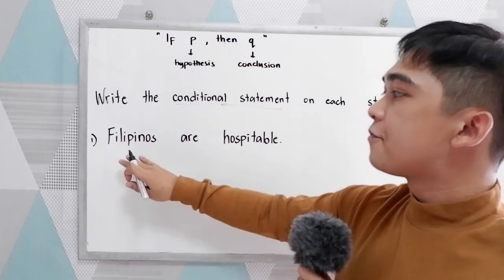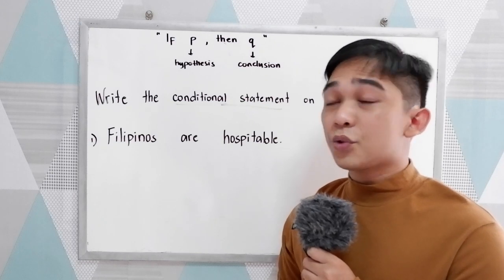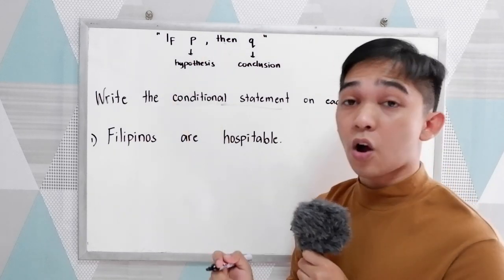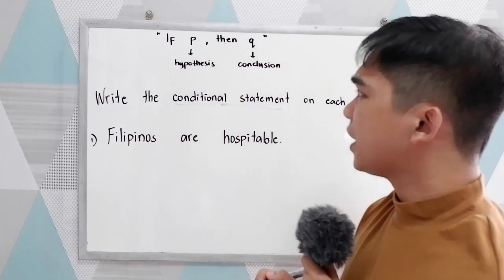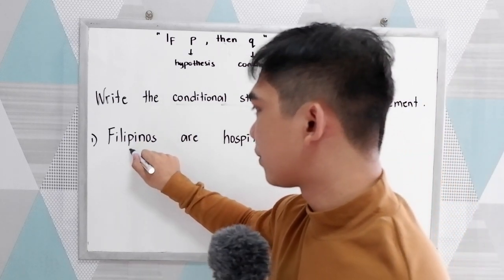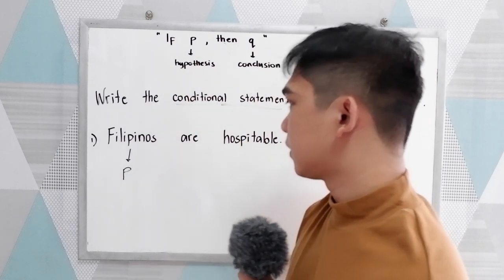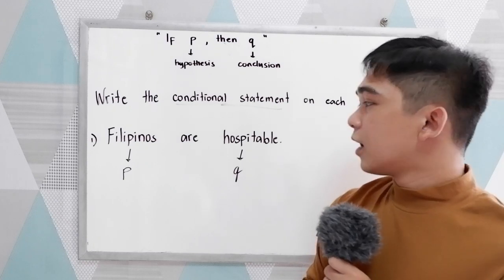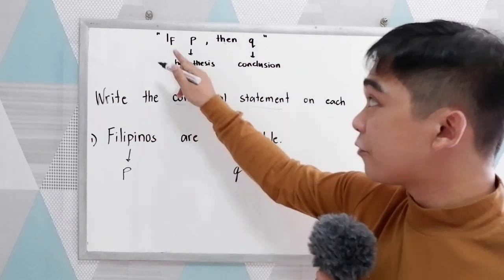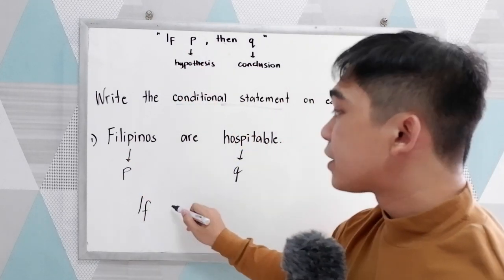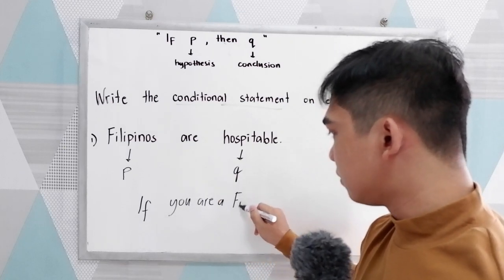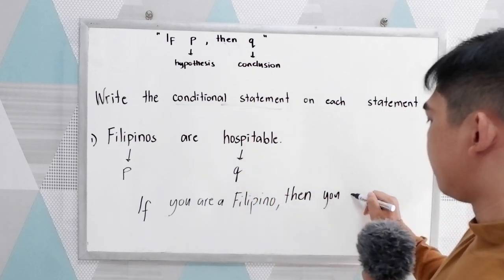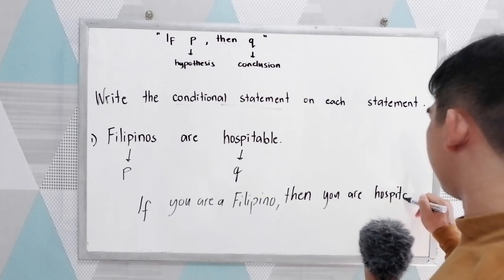Our first statement is: 'Filipinos are hospitable.' To write the conditional statement, first identify your hypothesis and conclusion. Here, our hypothesis (P) is 'Filipino,' and our conclusion (Q) is 'hospitable.' Writing it in if-then form: 'If you are a Filipino, then you are hospitable.'